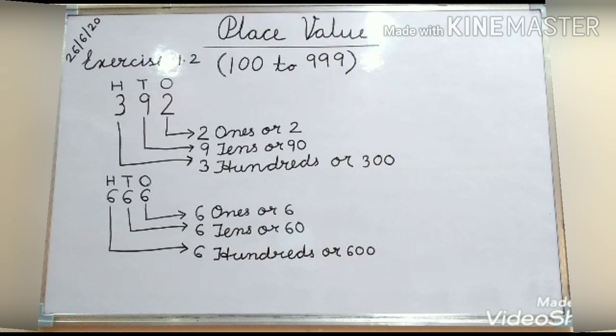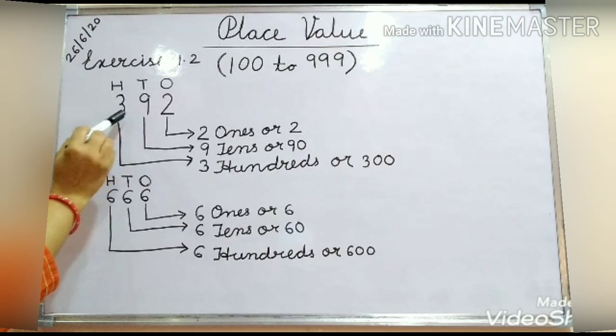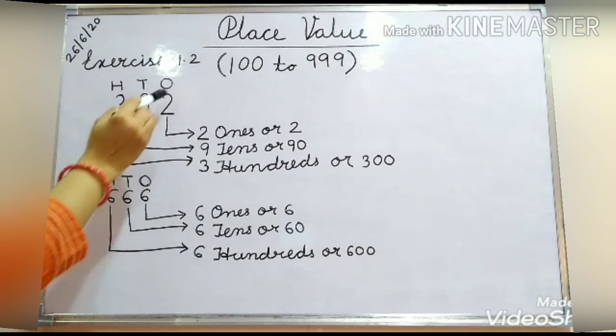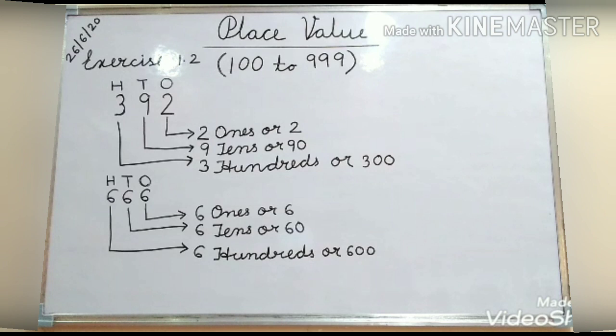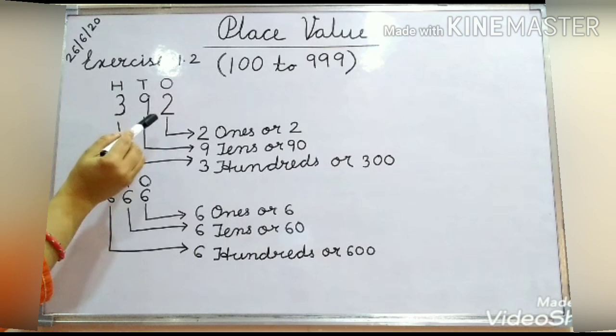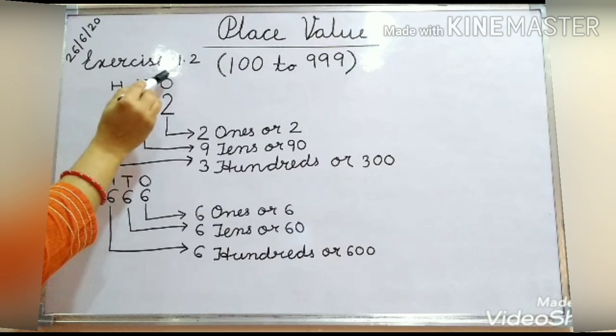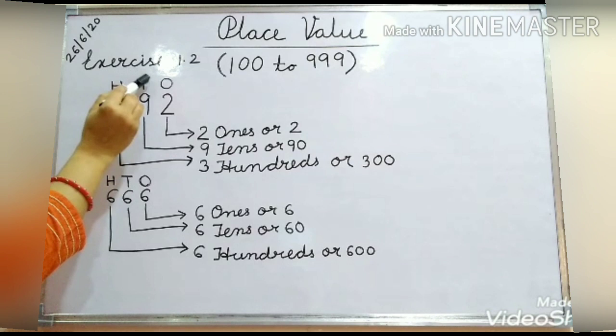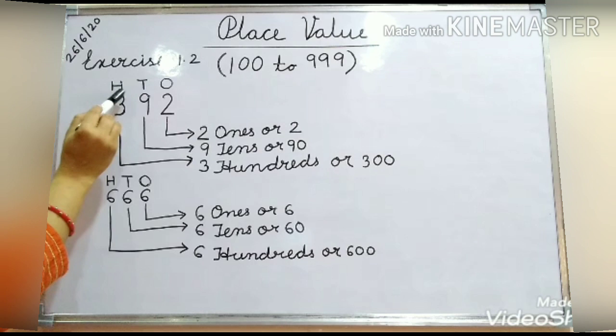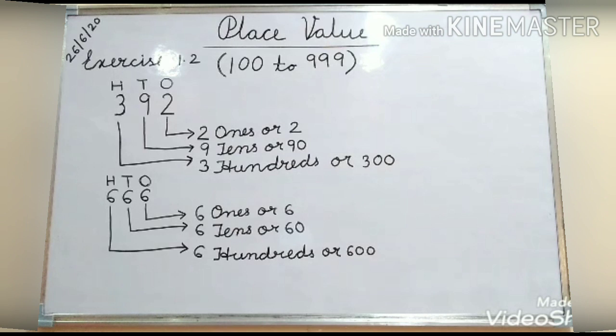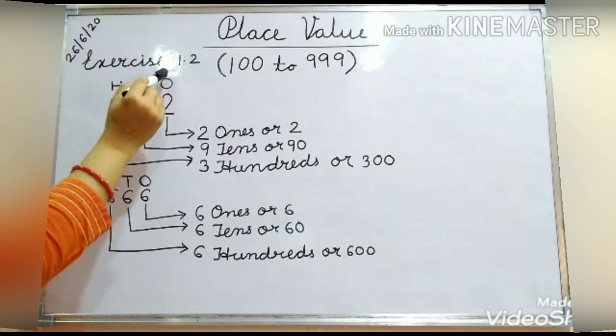To understand it, I have given one example. You can see here, the number is 392, and now you have to find out the place value of each digit. First, you write the place of each digit — in which place each digit comes. Here, 2 comes in the 1's place, 9 comes at the 10's place, and 3 comes in the 100's place. These are the places of each digit.